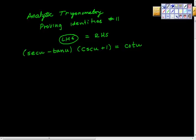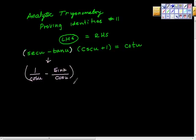I'm going to replace secant u with 1 over cosine u minus sine u over cosine u. Actually, wait — this secant u is 1 over sine u, right?